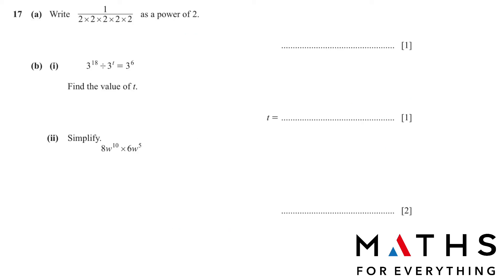Question 17: write 1 over (2 × 2 × 2 × 2 × 2) as a power of 2. There are five 2s, so we write 2 to the power of 5. Bringing it up from the denominator, the sign changes, so it becomes 2 to the power of negative 5.